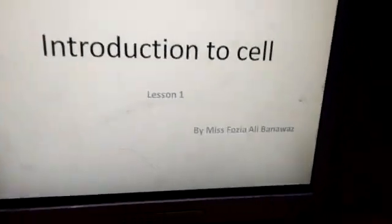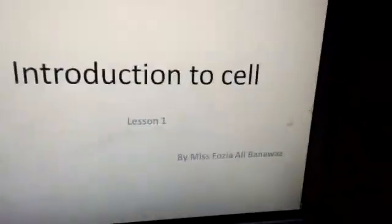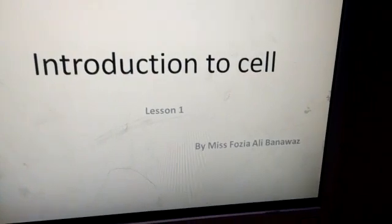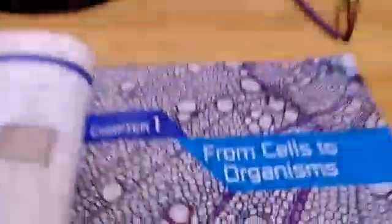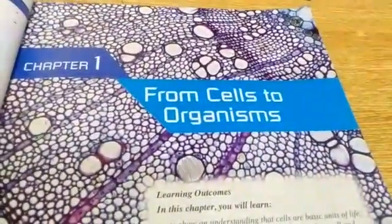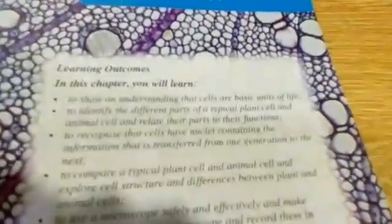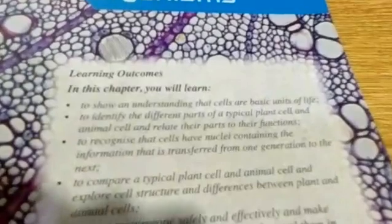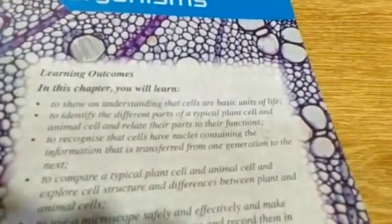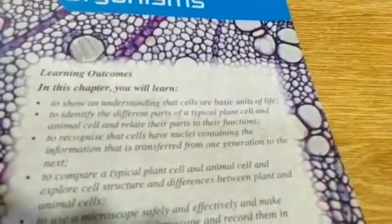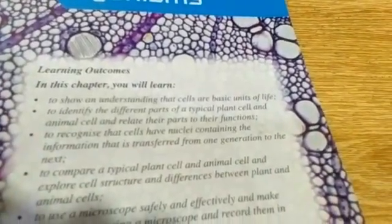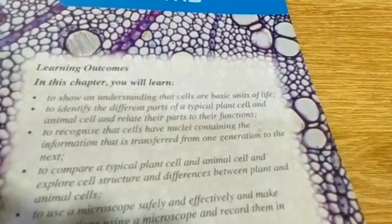Let's begin chapter number one. The title is From Cells to Organisms. In this first class, I will make clear the very first objective of the chapter: why cells are considered as the basic units of life.